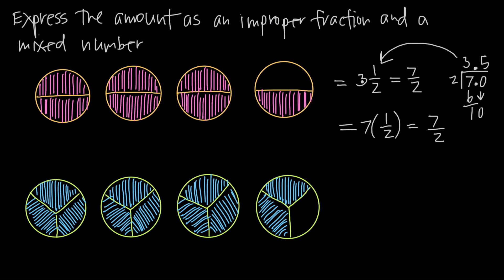If you have a mixed number, you can use that process: denominator times whole number plus numerator, all over the original denominator, gets you to the improper fraction. Both are completely valid ways to express a real amount of something. So we had three and a half pies — we can write it as three and a half, a mixed number, or as seven halves, an improper fraction.